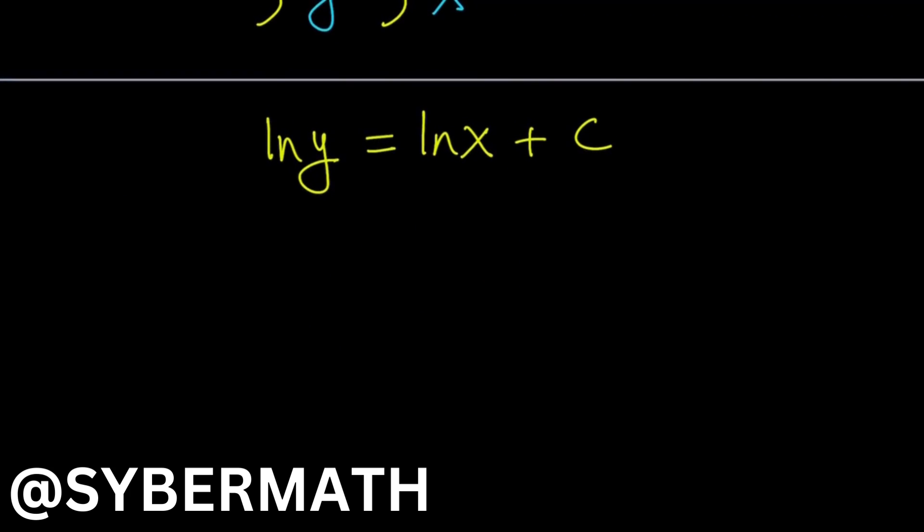Now what would you like to do at this point? How could you solve for y? You could do e to the power both sides. So e to the power ln y equals e to the power ln x plus c. And e to the power ln y is y, and then this can be separated into e to the ln x times e to the c.